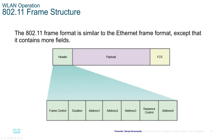In the 802.11 header, we have frame control, duration, addresses, sequence control, and a fourth address field. For this module, you only need to learn what the 802.11 frame looks like — you don't need to know what these addresses are in detail. Just know that the 802.11 frame format is similar to the Ethernet frame format but contains extra fields.